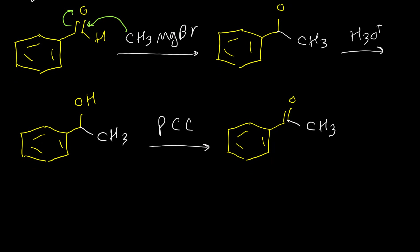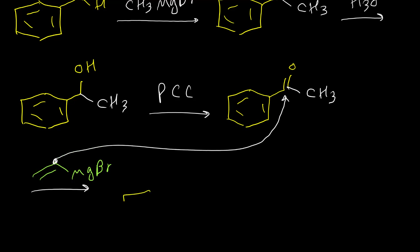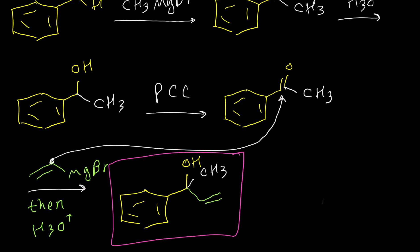Then we use another Grignard reagent — the Grignard reagent for the vinyl group. This negative carbon attacks here and we get this intermediate. After acidifying this intermediate, the O negative converts to OH. We don't need to write the Grignard and acidifying mixture in two separate steps; we can write H3O positive together. This is how we can synthesize this alcohol starting from benzyl alcohol.